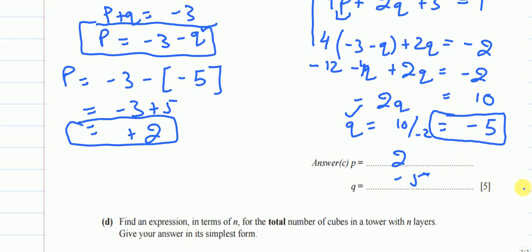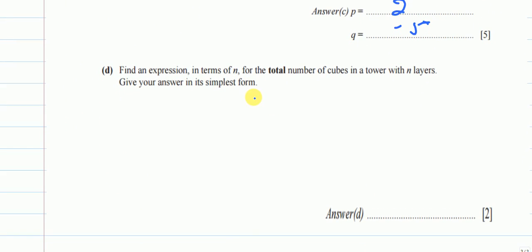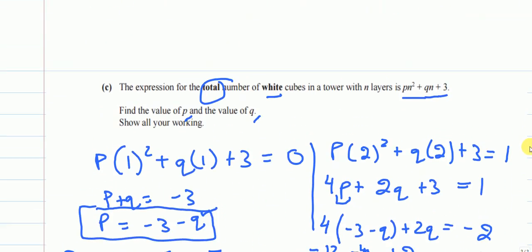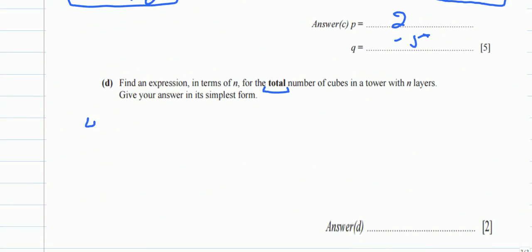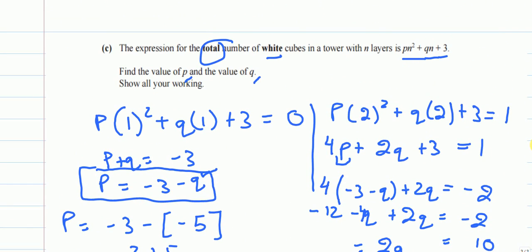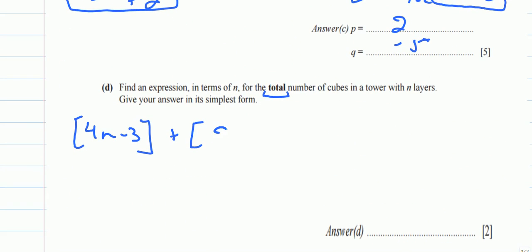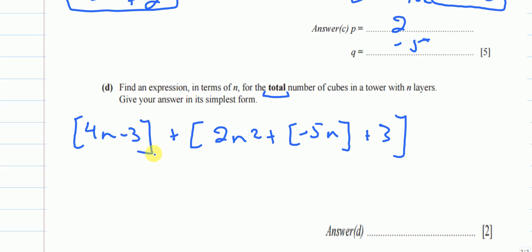For part D, we need an expression for the total number of cubes in a tower with n layers. We already have expressions for both gray and white cubes, so we just add them. Gray: 4n − 3. White: 2n² − 5n + 3. Adding: (4n − 3) + (2n² − 5n + 3).